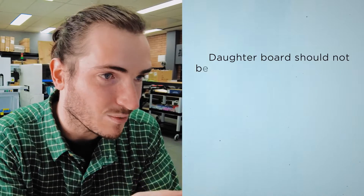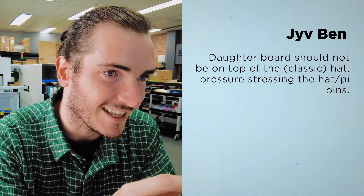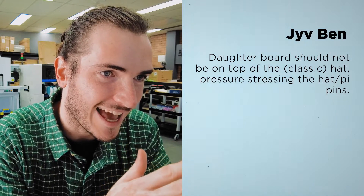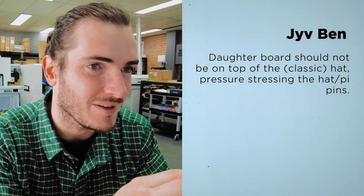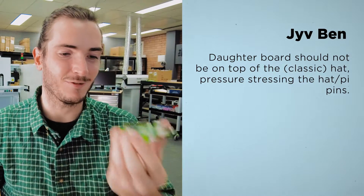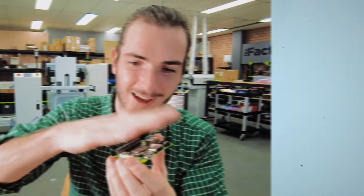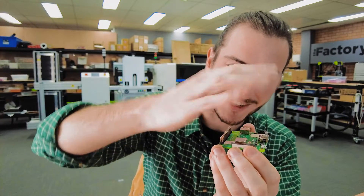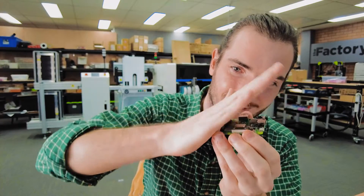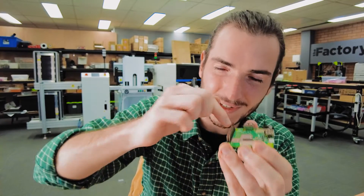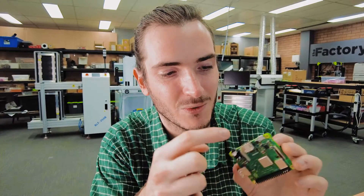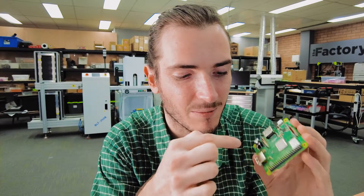Jive Ben says that the daughter board should not be on top of the classic hat, stressing the hat/Pi pins. So if we have a test jig on top of a Raspberry Pi, when we test on it the hat will cantilever on the pins, stressing them and maybe breaking them off. But that's not a big deal because we can always put in some standoffs on the Pi's mounting holes to support that whole platform on top of the Pi. So I'm not too concerned about that.